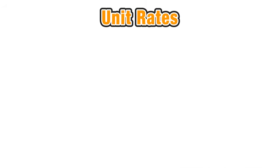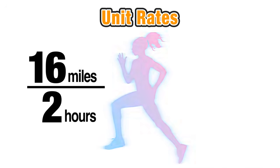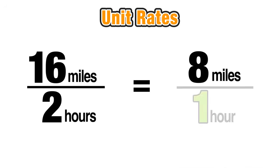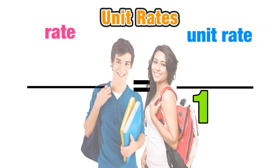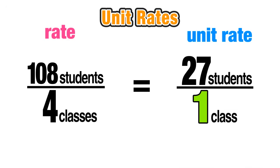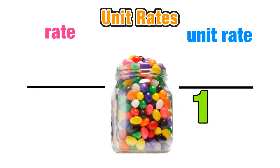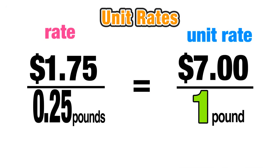When we want to find unit rates, we use proportional relationships. In the runner example, 16 miles in 2 hours was equivalent to 8 miles per hour. In the classroom example, 108 students in 4 classes was equivalent to 27 students per class. In the jelly bean example, $1.75 per quarter pound was equivalent to $7.00 for one full pound of jelly beans.